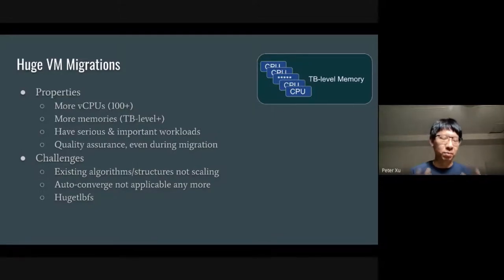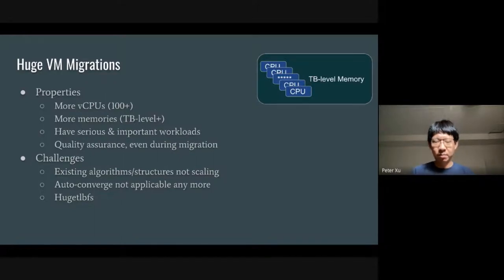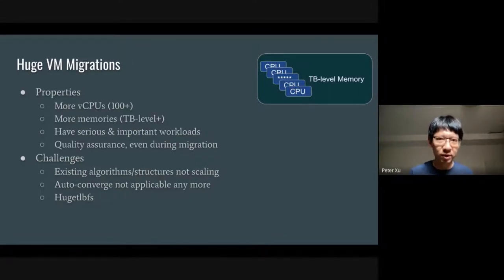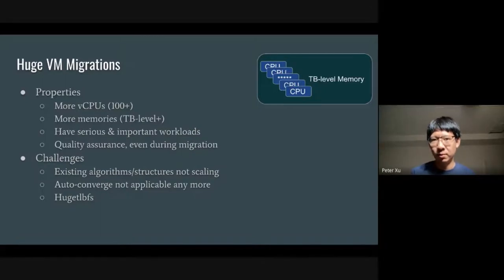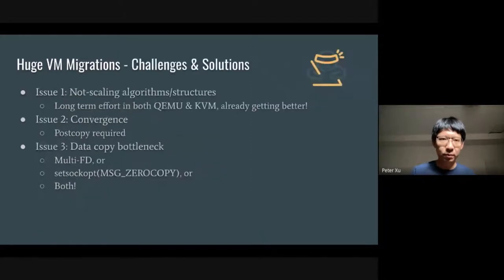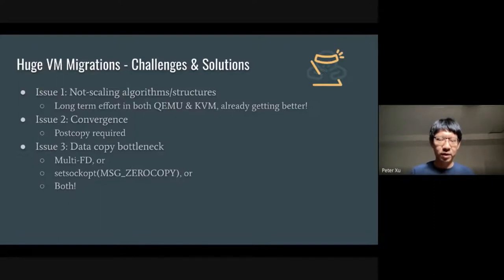People care even more about workload performance during migration and don't want to stop their workload. So auto-converge and similar throttling ideas may not really work in some use cases, and people may want a more strict requirement on migration. The third challenge is about huge tmpfs, which seems to be the de facto standard for huge virtual machines. It is growing, users are increasing, and so we should handle huge tmpfs well in every aspect. I tried to summarize all these challenges — at least the important ones for the near future — and the solutions that may help.